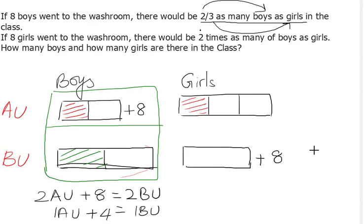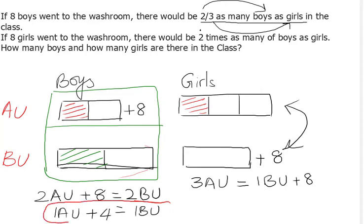Let's try to do that here as well for the girls. We know that these two are going to be equal, so three a units here is equal to one b unit plus eight. Now we know from this that one b unit here is equal to one a unit plus four.